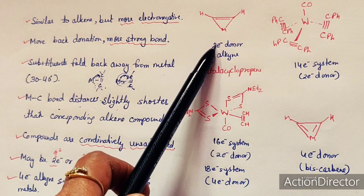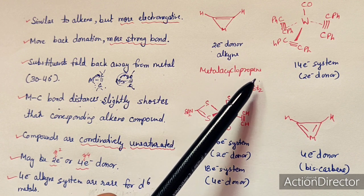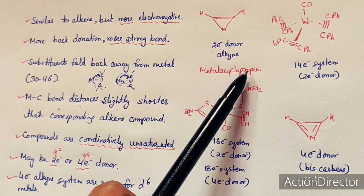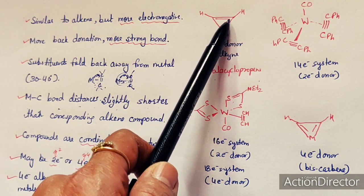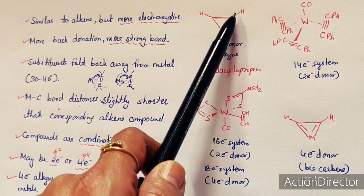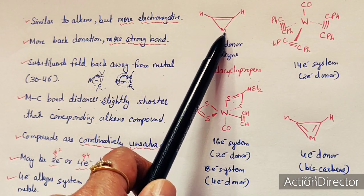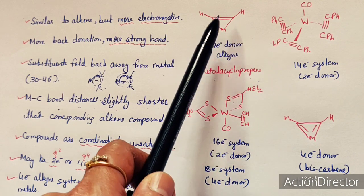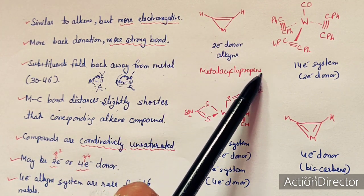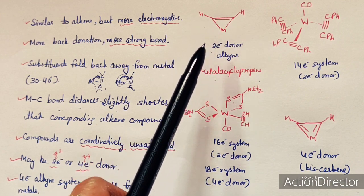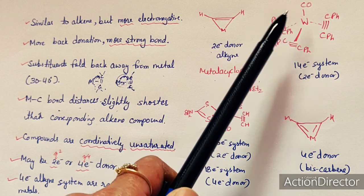The metal alkyne complex can be viewed as a kind of metallocyclopropene — analogous to metallocyclopropane in olefinic ligands, but here there is a double bond. In this structure, one metal and two carbon atoms form the metallocyclopropene ring, where one carbon of cyclopropene is substituted by the metal center. This shows how strongly the alkyne is bonded to the metal center. In this structure, the alkyne acts as a two-electron donor. One example shown is a 14-electron system where the alkyne is counted as a two-electron donor.